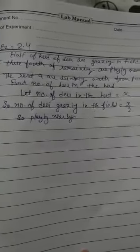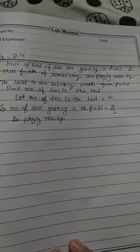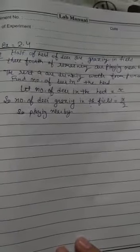Okay children, now understand question number eight. It says half of the herd of deer are grazing in the field and three-fourths of the remaining are playing nearby. The rest of nine are drinking water from the pond. Find number of deer in the herd.